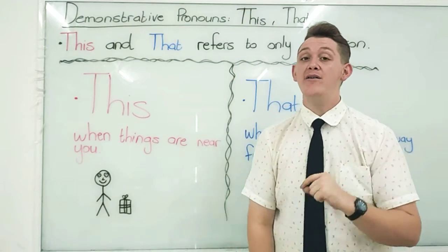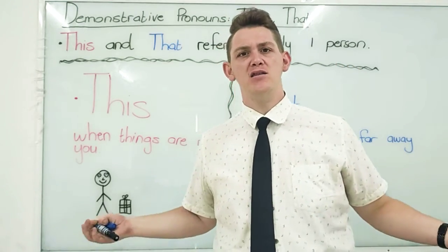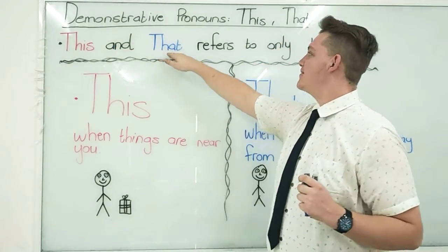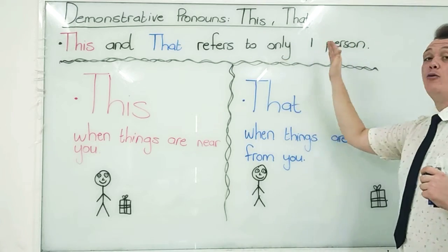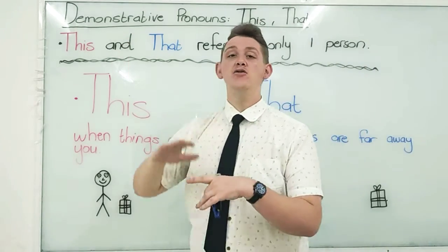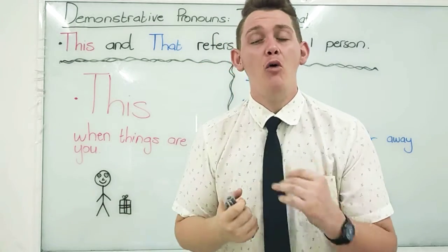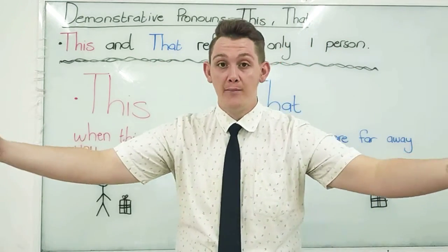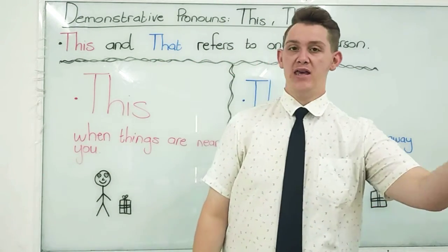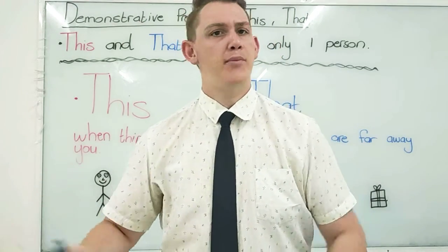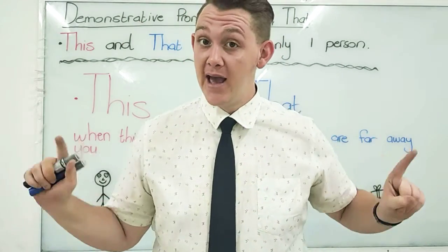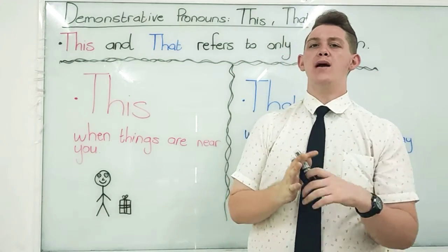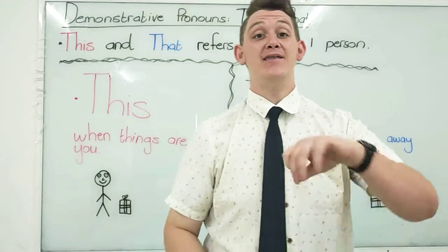So I need you to pay full attention to me so I can explain. First things first: "this" and "that" refers to only one person or one thing. If it's more than one person, we use "these" and "those" — but we're not going to talk about that yet. Today we're talking about "this" and "that," so always remember: one person, one thing — "this" and "that."